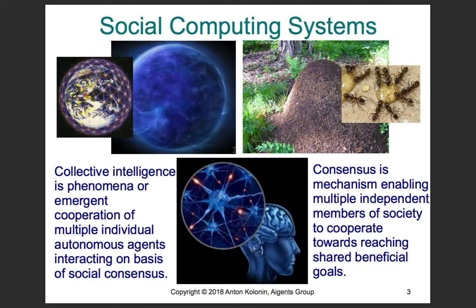This is the way microbiota in the human body assures wellness of its carrier. This is the way the society of neurons in the human brain controls successful operation of the entire body. This is the way ants reach consensus while pulling a vent towards the anthill. This is the way entire humanity moves forward, making life more safe and pleasant for most of its members.